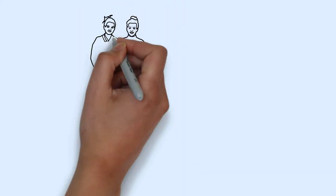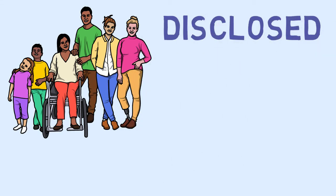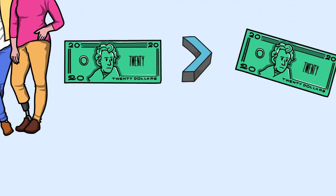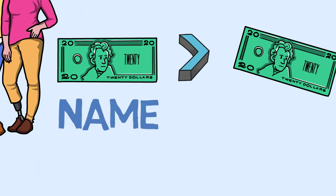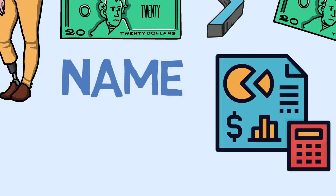Relationships between a parent and its subsidiaries shall be disclosed irrespective of whether there have been transactions between them. An entity shall disclose the name of its parent and, if different, the ultimate controlling party. If neither the entity's parent nor the ultimate controlling party produces consolidated financial statements available for public use, the name of the next most senior parent that does so shall also be disclosed.